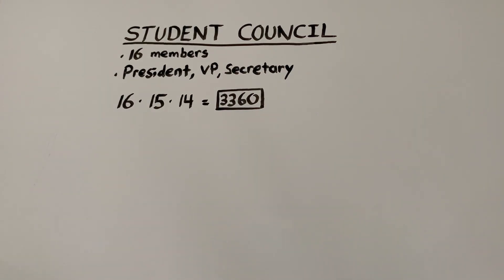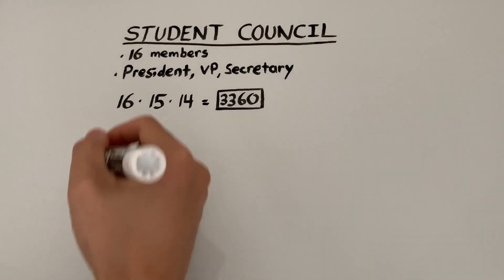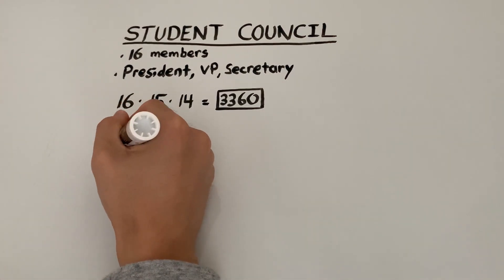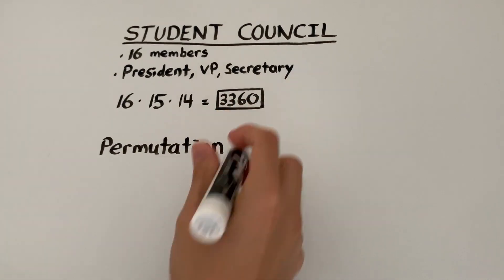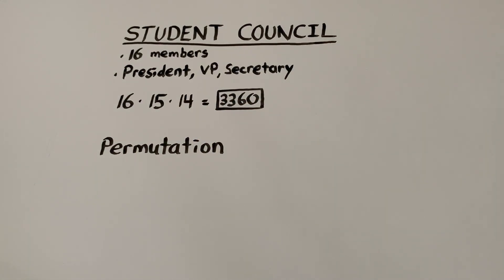What we've just done here is we've started with 16 members and then had to fill three positions. This situation is called a permutation. A permutation occurs whenever we have to choose several items one at a time from a larger group of items — in this case, the items happen to be students.